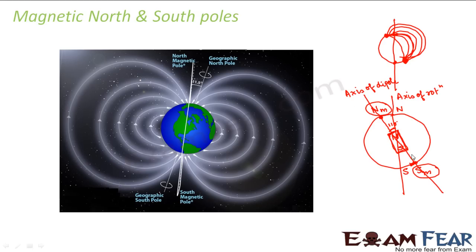If you are asked to draw the magnetic field lines of the earth, you should draw the field lines from south to north. The magnetic south pole is at one end, the magnetic north pole at the other, and the magnetic field lines go from south to north. This is because the magnetic south pole actually behaves as a magnetic north pole, and the magnetic north pole actually behaves as a magnetic south pole. So when drawing, magnetic lines of force go from magnetic south to magnetic north.